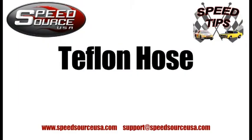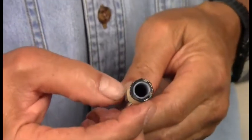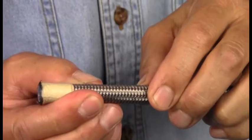This type of hose has a Teflon liner in it, and then a double stainless steel braided covering on the outside.